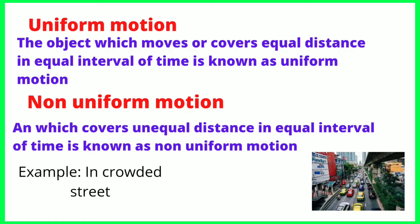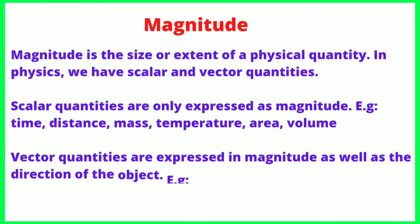Non-uniform motion means unequal distances are covered in equal intervals of time. For example, if an object goes 2 meters in 2 seconds, then 3 meters in 2 seconds, then 4 meters in 2 seconds — that is non-uniform motion. An example of non-uniform motion is a crowd on streets where we can get a lot of traffic, and the speed changes in the moment.